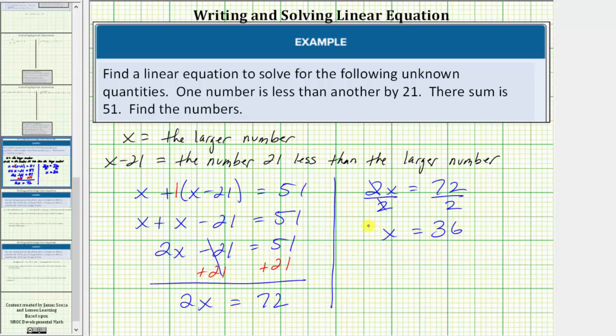Now that we know x equals thirty-six, we can determine the two numbers. The first number is just x, and we know x equals thirty-six. The second number is x minus twenty-one, which is equal to thirty-six minus twenty-one, which equals fifteen. So the two numbers are thirty-six and fifteen.